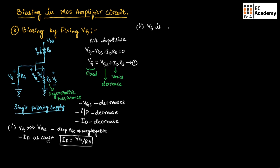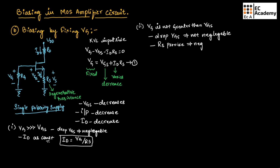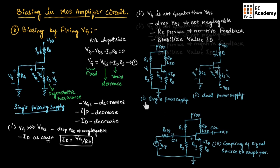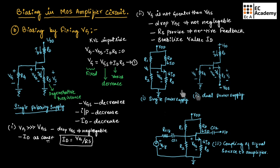If VG is not greater than VGS, then the drop across VGS is not negligible. In this case, RS will provide the required negative feedback, which will stabilize the value of ID and keep it constant. Figure 1 and figure 2 show the practical implementation of biasing by fixing VG using a single power source or dual power source. In the dual supply, the positive supply is connected to drain and the negative supply is connected to source.